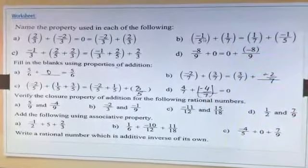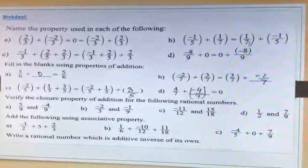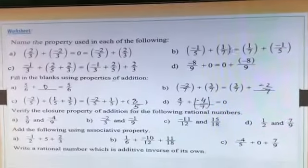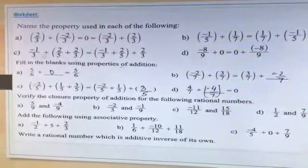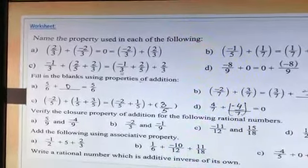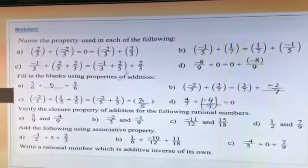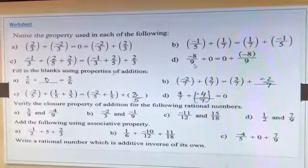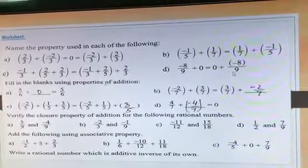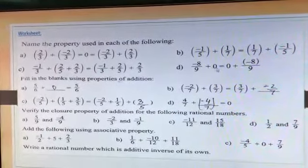Second is minus 1 by 5 plus 1 by 7. Here we have to change the order of the numbers, so which property is this? Commutative property of rational numbers. Third is minus 1 by 3 plus 2 by 5 plus 2 by 3. Three numbers are given and we have to change the order — this is called associative property of rational numbers. Next is minus 8 upon 9 plus 0 equals 0 plus minus 8 upon 9. Which type of property? Additive identity, because we are adding 0.